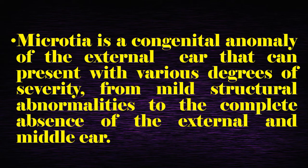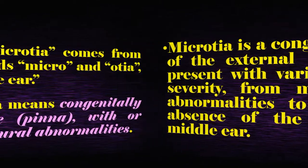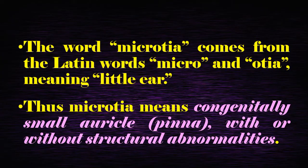Microtia can be defined as a congenital anomaly of the external ear that can present with various degrees of severity, from mild structural abnormalities to the complete absence of the external and middle ear. The word microtia comes from the Latin words micro and otia, meaning little ear. Thus, microtia means a congenitally small auricle with or without structural abnormalities.